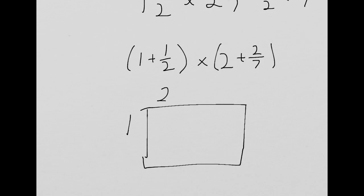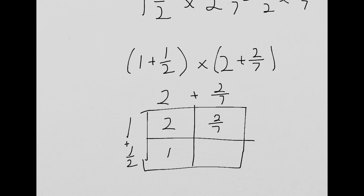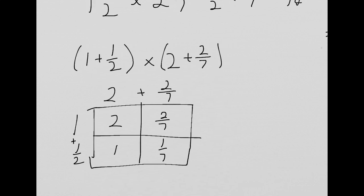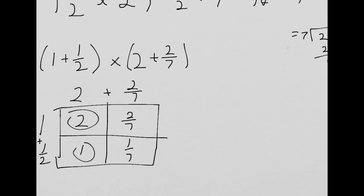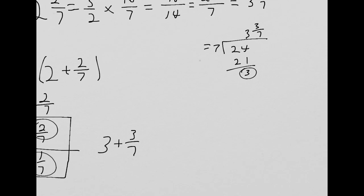I'm going to demonstrate it to you, but I would only recommend this if you feel solid with the area model. We have 1 and 2, and then it was 2 plus 2/7, and 1 plus 1/2. Then you can find all of your partial products and then add them up. 1 times 2 is 2. 1 times 2/7 is 2/7. 2 times 1/2 is 1. And 2/7 times 1/2 is 2/14, a.k.a. 1/7. Now we have all these partial products. I see here we have three plus, well, that would be 3/7, wouldn't it? 3 and 3/7, is that what we said over here? Yeah, you'll notice that those are equal.